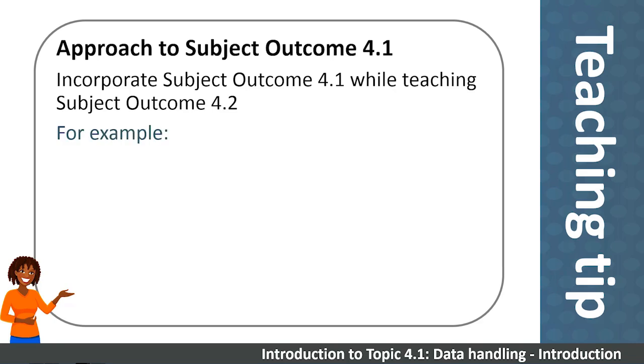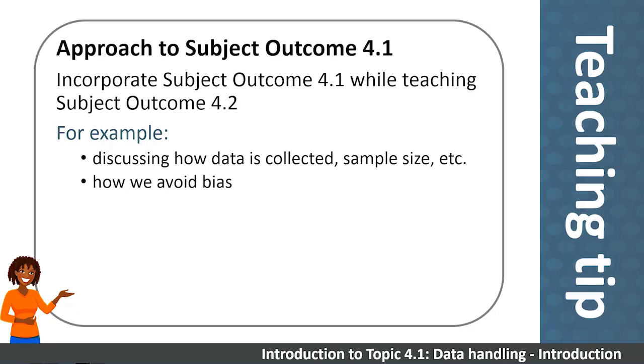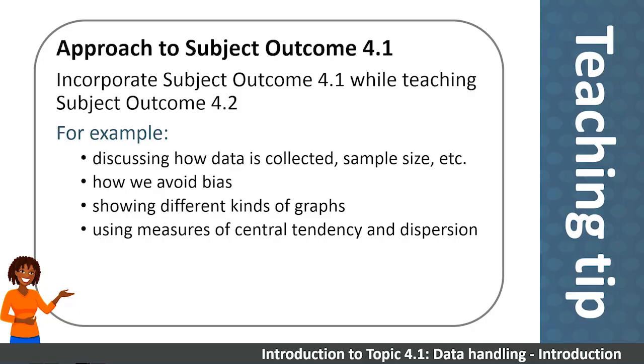For example, when working with data handling contexts in Subject Outcome 4.2, also discuss issues around collecting data, sample size, avoiding bias. Show students that data can be represented in different kinds of graphs. Ensure that they are exposed to the basic measures of central tendencies, mean, median and mode, and dispersion in these examples too.